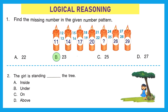Question 2: 'The girl is standing dash the tree.' We need to find the correct preposition. Is she standing inside the tree? No. Is she standing under the tree? Yes, it is under the tree — not on and not above. So the right option is B, under.